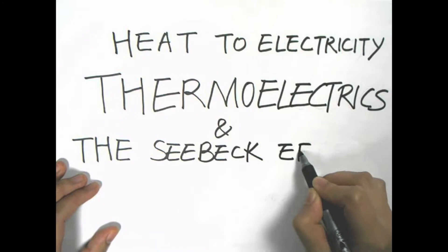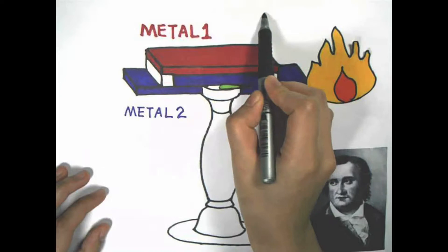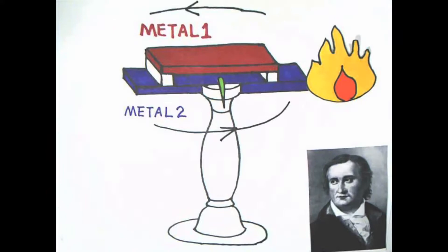First, we have to meet a scientist named Thomas Seebeck. In the early 1820s, Seebeck found that heating a junction of two different metals made his compass needle deflect. From Physics 101, we know that magnetic fields arise because of currents, so heating the junction must have created a current in the circuit loop.